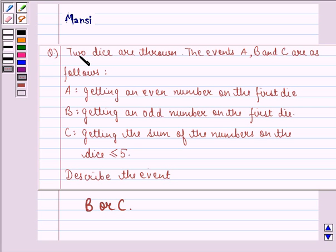The question says two dice are thrown. The events A, B and C are as follows. Event A is getting an even number on the first die. Event B is getting an odd number on the first die. And event C is getting the sum of the numbers on the die less than or equal to 5. Now describe the event B or C.